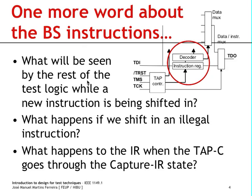Before concluding, I would like to say a few words about what happens when you shift in an instruction. When you are shifting in a new instruction, the sequence of ones and zeros that goes through this structure is not seen by the decoder, because the instruction register, in much the same way as it happens with the boundary scan register, is composed by a set of cells that have a shift stage and a latch stage. The latch stage holds the previous instruction at the output of the register, so the decoder always sees the previous instruction while we are shifting in a new one. Now if we shift in an illegal instruction, the standard requires that the decoder will take it by default as the bypass instruction.